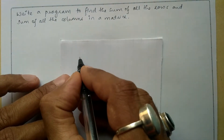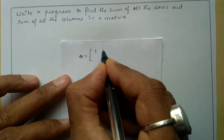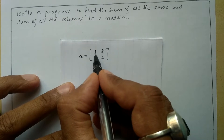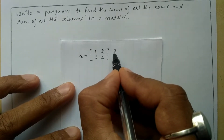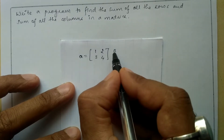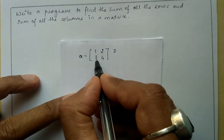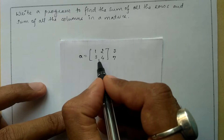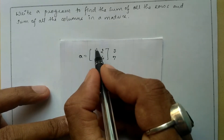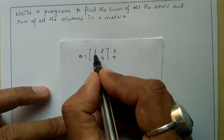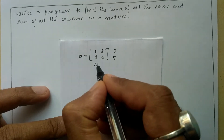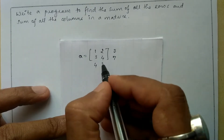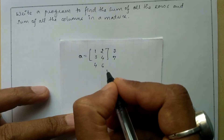Let us take an example. A is equal to whose elements are 1, 2, 3 and 4. The first row consists of elements 1 and 2, so 1 plus 2 gives us 3 — that is the first row sum. Similarly, the second row consists of elements 3 and 4, so 3 plus 4 gives us 7. The first column consists of elements 1 and 3, so 1 plus 3 gives us 4. The second column consists of elements 2 and 4, so 2 plus 4 gives us 6 — that is the sum of the second column.